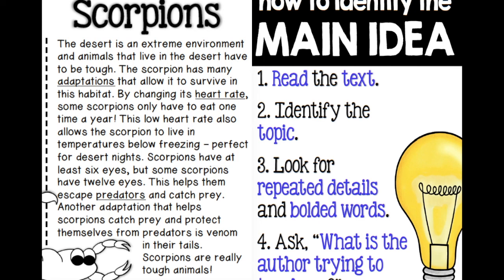On the left, we have a paragraph with some information about scorpions. And on the right, we've got four steps that can show you how to identify the main idea. Let's go over those real quick. First thing we're going to do is read the text, so we have the information in our brain. Then second, we're going to try to figure out the topic — one word that would explain everything these sentences describe. A lot of times, you can just look in the title and that'll tell you the topic.